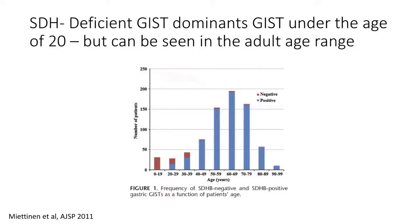SDH-deficient GIST clearly dominates the GISTs diagnosed in patients under the age of 20. This slide summarizes patients whose pathology was reviewed by the AFIP, a reference lab at the NCI. The red bar represents patients that are SDH deficient or SDH negative, and the blue bar represents those that were SDH positive, meaning the majority had an activating KIT mutation. In people under the age of 20, the majority are SDH deficient, and as you get older, the majority of cases are SDH intact.